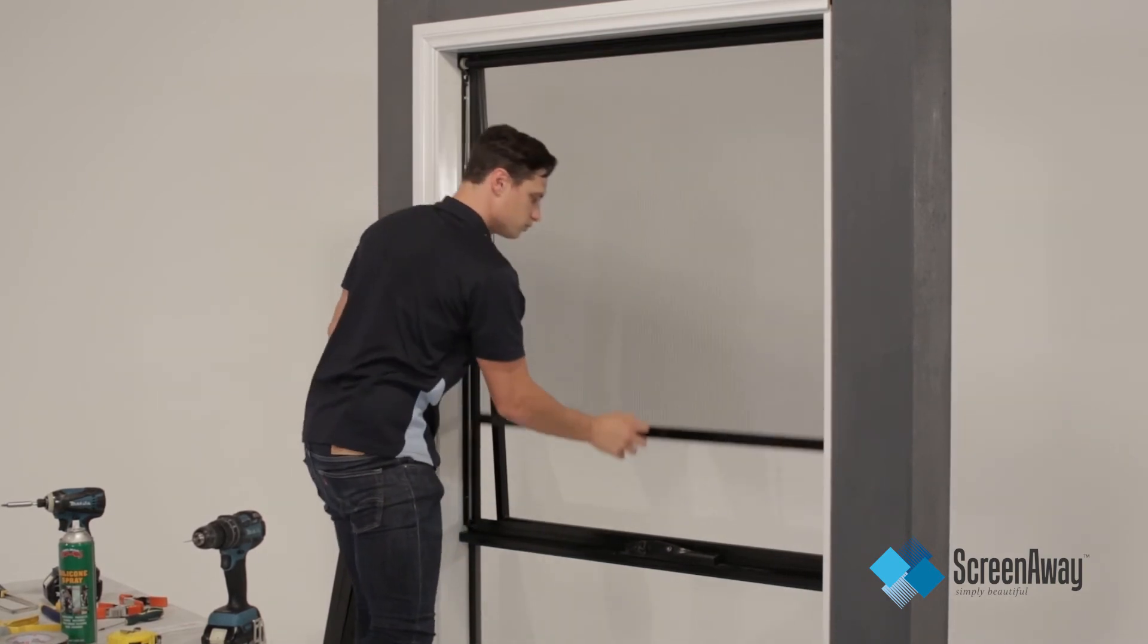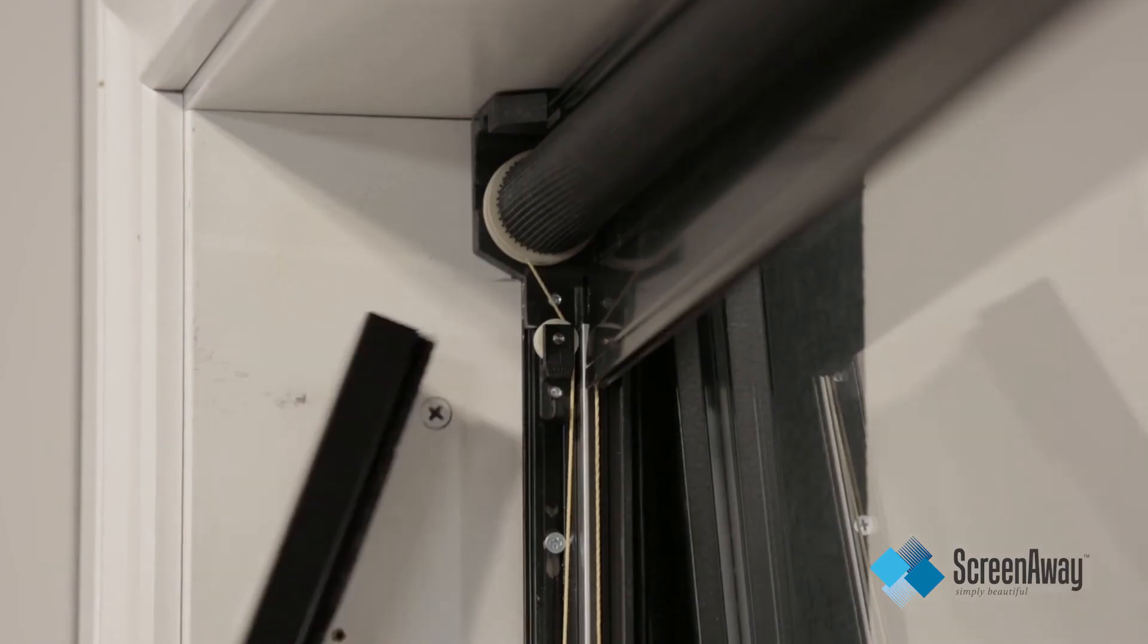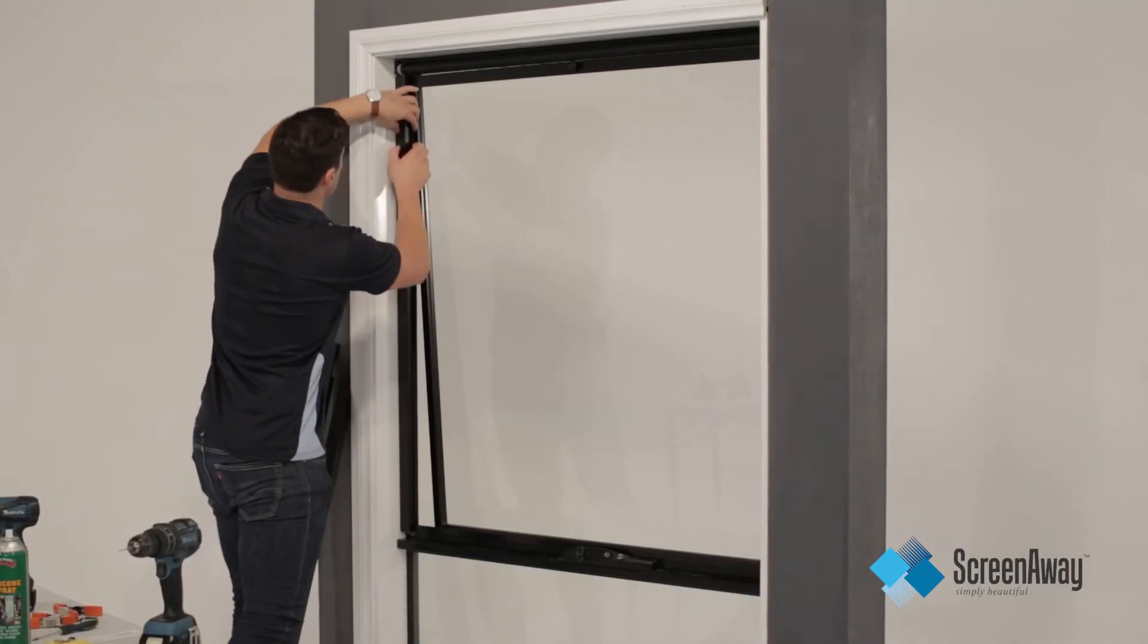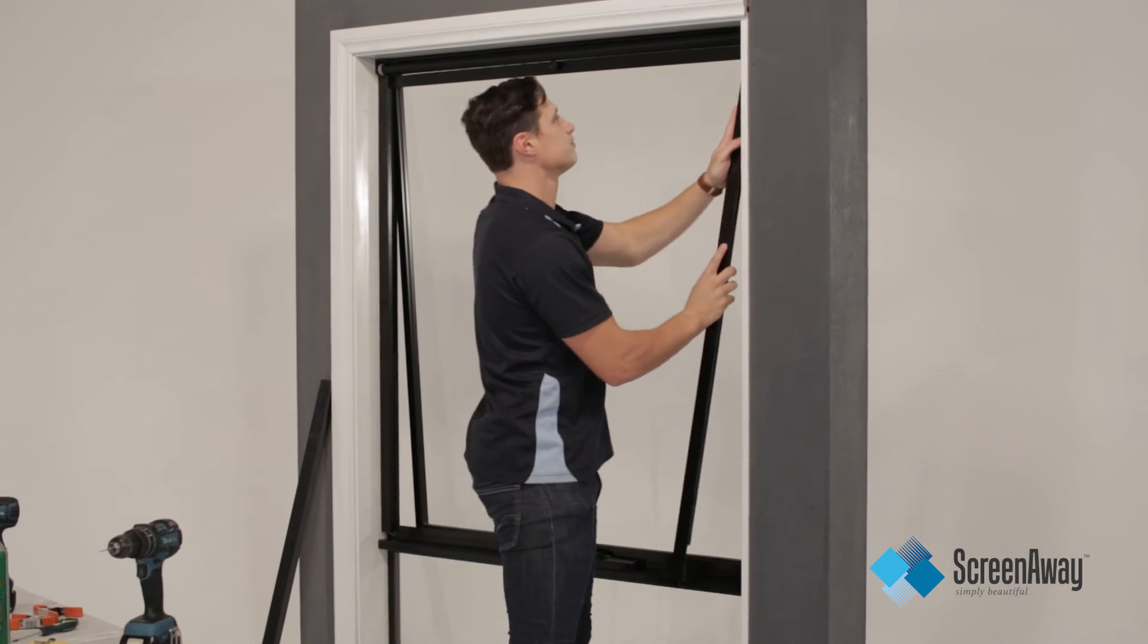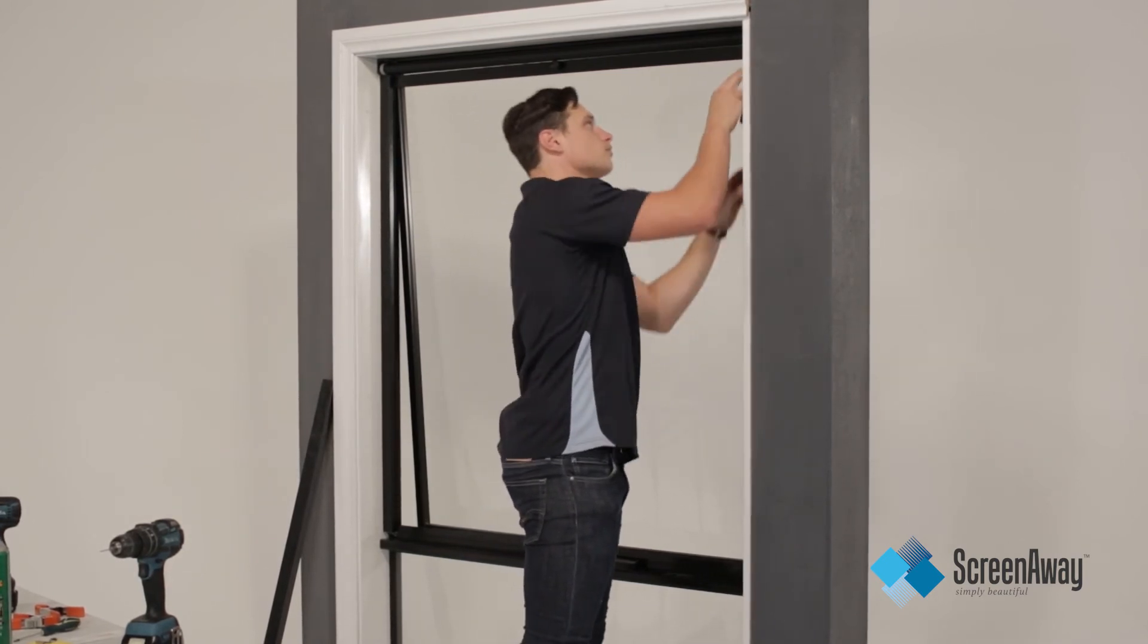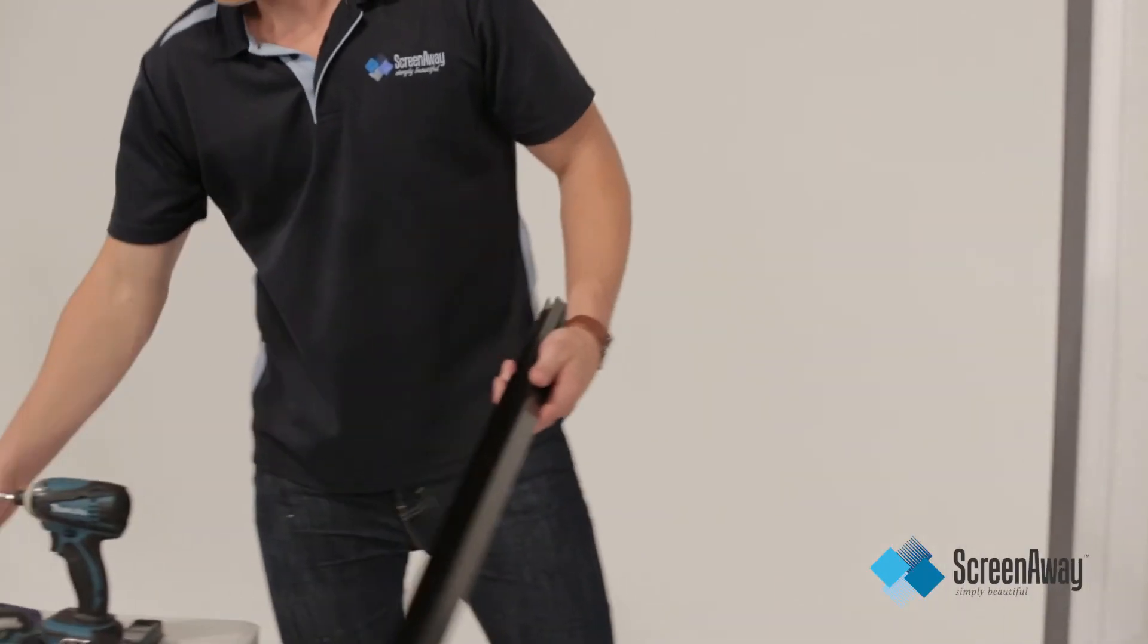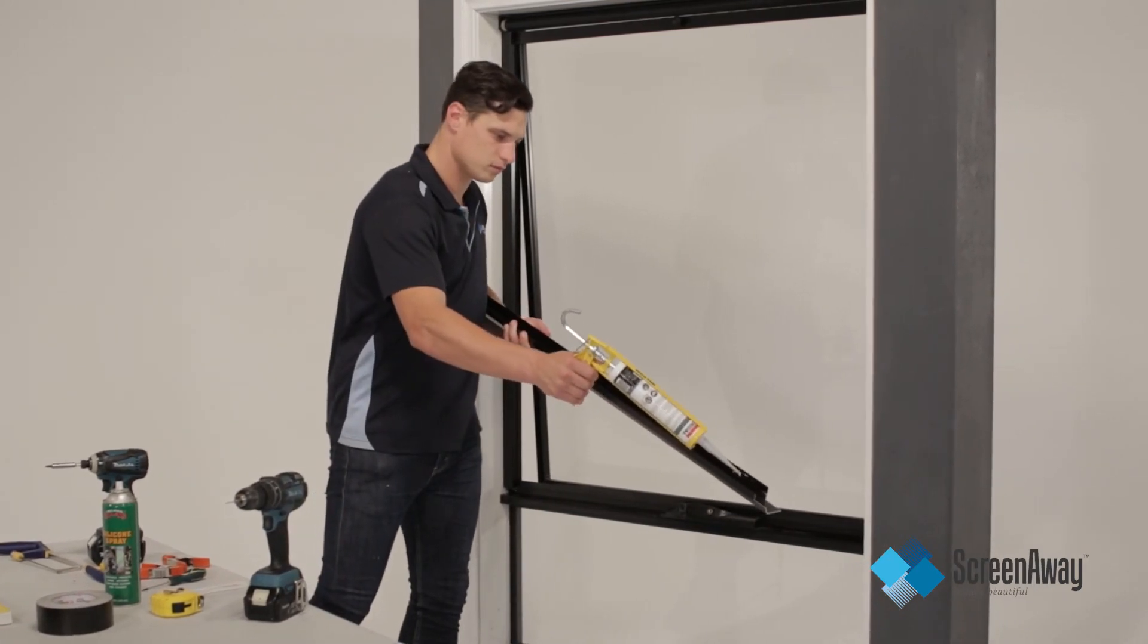Once satisfied with the correct tension, it is time to attach the side covers and the top helmet. Click the side caps onto the side frames by placing into position and gently squeeze until they lock into place. Now silicone inside the ridge of the top cap, then attach to the top frame.